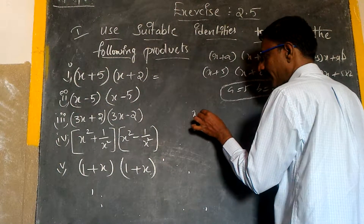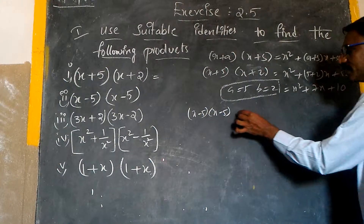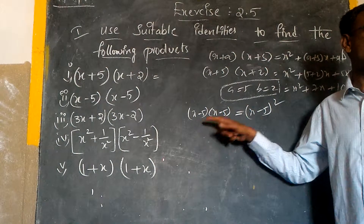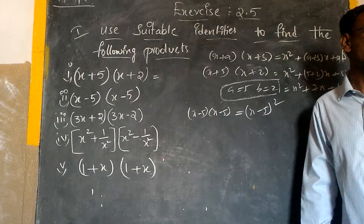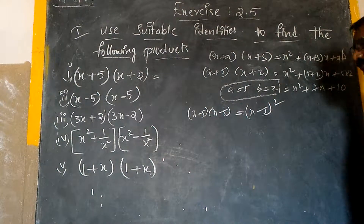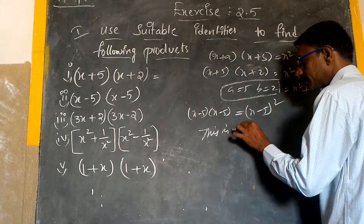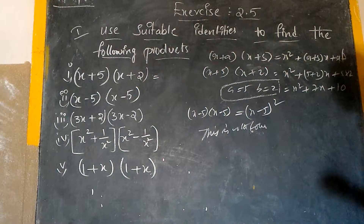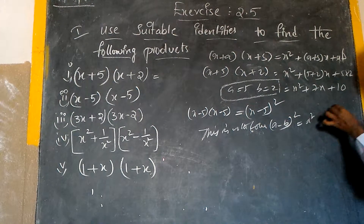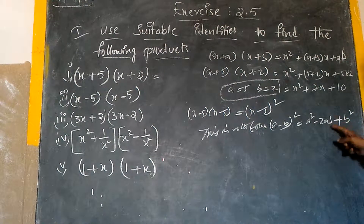Now the second one: (x − 5)(x − 5). This we can write as (x − 5) whole square. Same term times same term. Just as x into x equals x², similarly (x − 5)(x − 5) is nothing but (x − 5)². This is in the formula of (a − b)² = a² − 2ab + b².